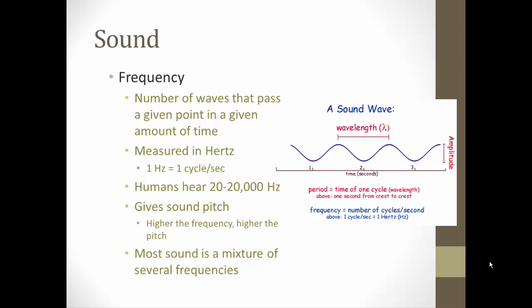We can characterize sound waves in two ways. One is by frequency — the number of waves passing a given point in a given amount of time. Long wavelengths give low frequency; short wavelengths give high frequency. These are measured in hertz, and humans can hear somewhere between 20 and 20,000 hertz. The most sensitive sounds we hear are between 1,500 and 4,000 hertz. Frequency gives us pitch — the higher the frequency, the higher the pitch. Most sounds are a mixture of several frequencies.